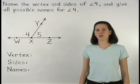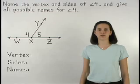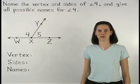In this problem, we're asked to name the vertex and sides of angle 4, then give all possible names for angle 4.